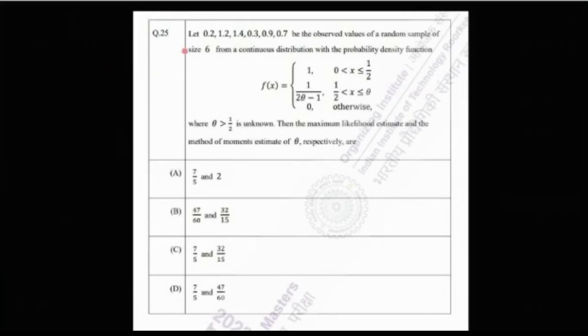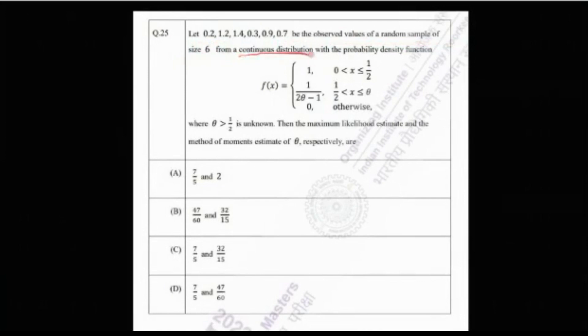The problem says that let these quantities — 0.2, 1.2, and so on — be the observed values of a random sample of size 6 from a continuous distribution with the PDF: f(x) = 1 if x lies between 0 and 1/2, and 1/(2θ − 1) if x lies between 1/2 and θ, and 0 otherwise. Theta greater than 1/2 is unknown.